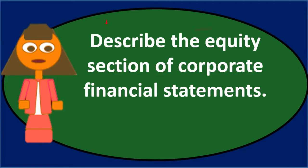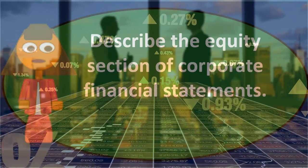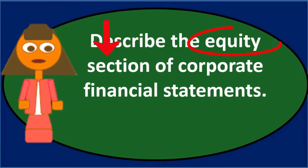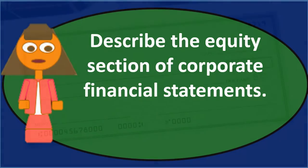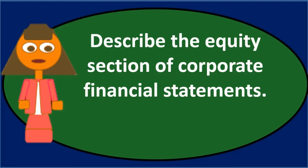Those are the two primary components of the equity section. We separate them because when we give a distribution from a corporation, we want to track whether it came from the initial investment — which we don't typically want to distribute — or from earnings generated over and above the initial investment, which is retained earnings. Dividends come out of retained earnings, not out of the common stock amount, which represents the initial investment.